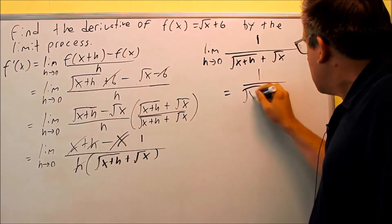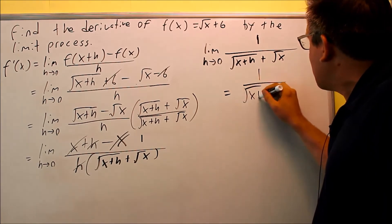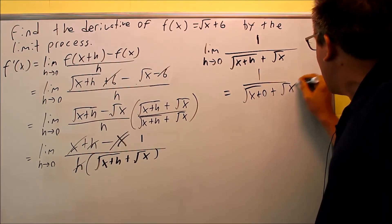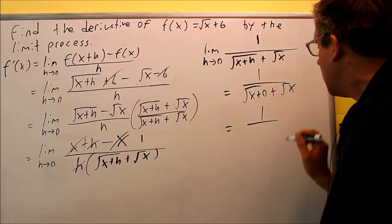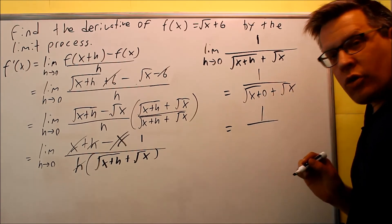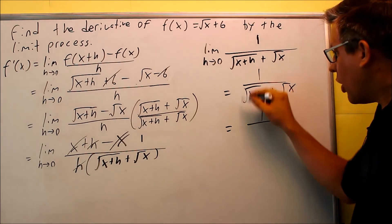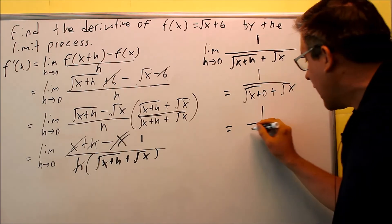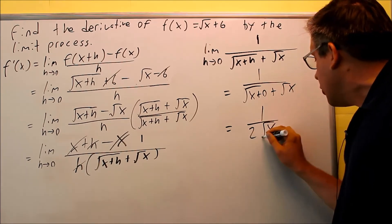So I get 0 in for h. So I have x plus 0 plus square root of x. That's going to give me square root of x and a square root of x. That's like terms. I can combine both of those. Because it's a 1 root x and a 1 root x, so when I add them together, I get a 2 root x.